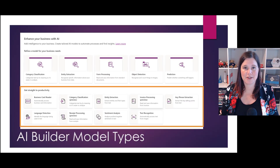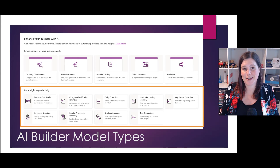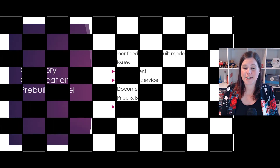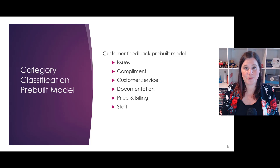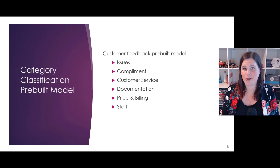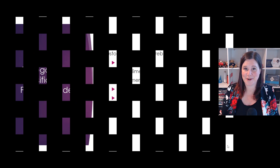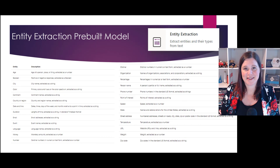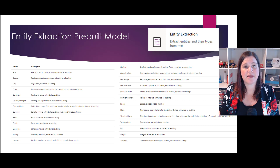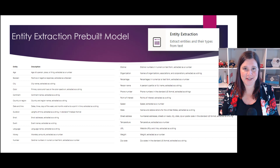Now let's have a look at the pre-built models. Microsoft has done all the training and you can just use them in your apps and workflows. The pre-built category classification model comes with categories ready to go for a typical customer service scenario, so if that works for you, you can just grab and go. With entity extraction, the standard pre-built model can pick things out of text like percentages, names, ages, colors, and so on.